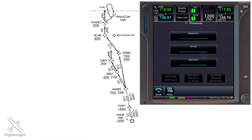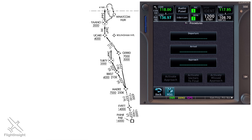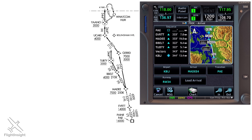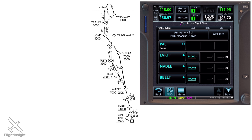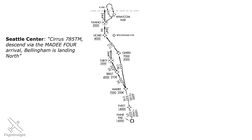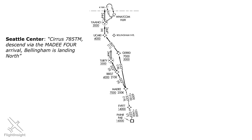When you're loading the procedure on the GPS like the GTN 750 here, it'll query you for the runway in use, and your input determines the route it'll navigate you on. This is why ATC tells you in advance which runway is in use, so you have time to program the correct route.